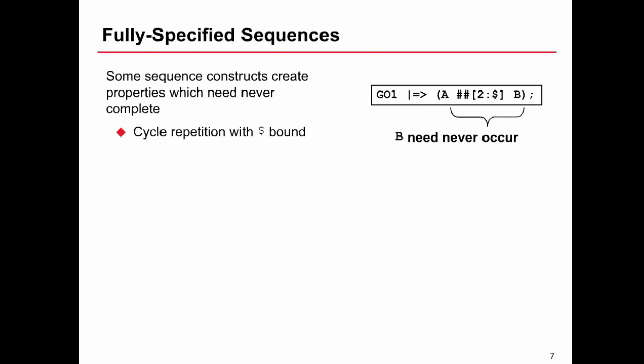Now, a different problem we can have is that we can create some properties which never need to complete. So we define behavior that the syntax rules of the language don't require ever happens. And one way of doing this is with the dollar repetition operator. So this property we can say here says if we have go, this implies that I have the sequence a followed by between two and an infinite number of cycles followed by b. Now, infinity just means exactly that. So what that means then is that we'd never require b to actually occur.